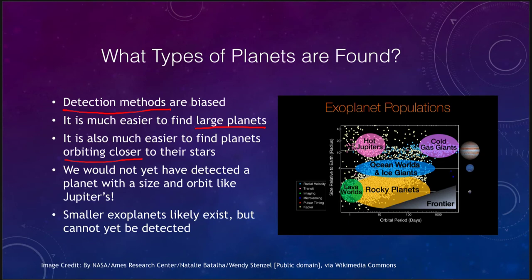Well, a large planet is going to eclipse the star more and cause a bigger drop in its light, making it easier to find. A large planet is going to tug on its star more and make it easier to detect as well through the Doppler effect. So it's easier to find large planets. It's also easier to find those that are closer to their stars.